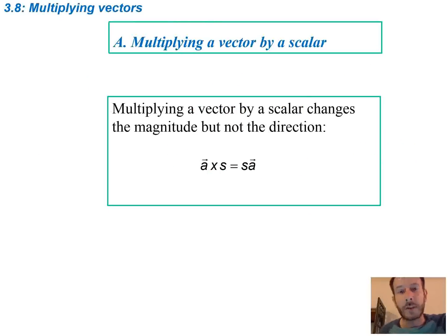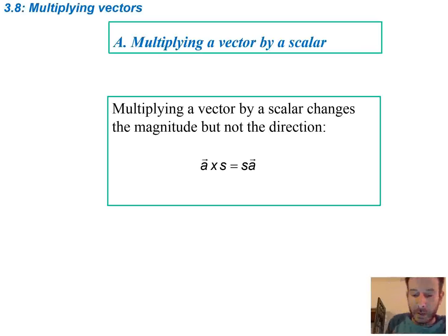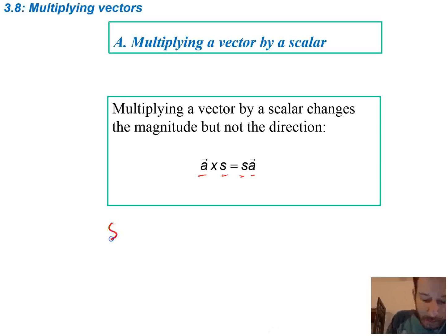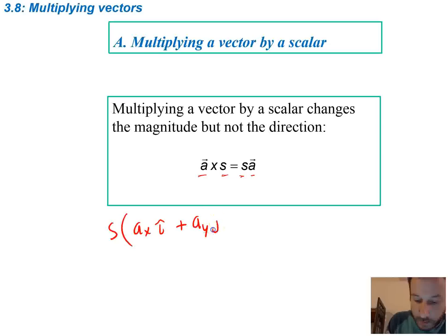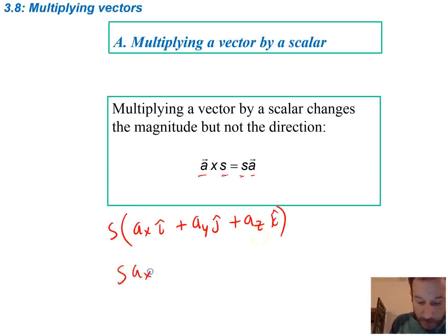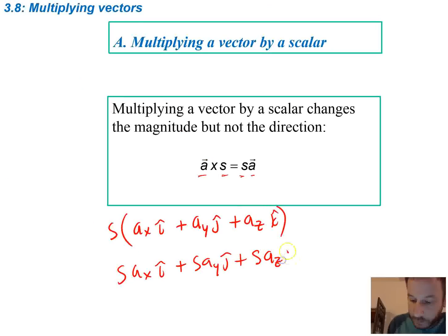We can also multiply vectors, and there are different ways of doing so. If we just had a scalar and were going to multiply it by a vector, we wouldn't change the direction at all — we'd only change the magnitude. So if we have vector A multiplied by scalar s, in unit vector notation that would be s times Ax in the i direction, plus s·Ay in the j direction, plus s·Az in the k direction.